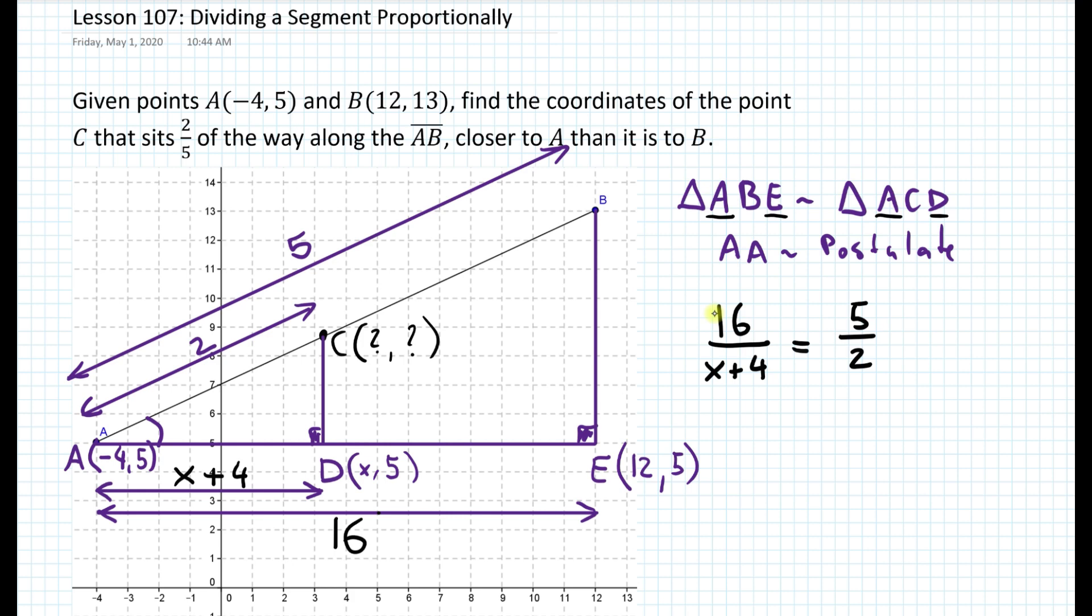The second part, the 5 over 2, that is A, B in this triangle, and then we have over A, C in the other triangle. So that will be the second part of this proportion or the ratio of the 5 over 2. So all we need to do here is cross-multiply this and figure out the value of x. So let's do that really quick. So we have 32 is equal to 5x plus 20, which means that 5x will equal to 12, and x is going to be equal to 2.4.